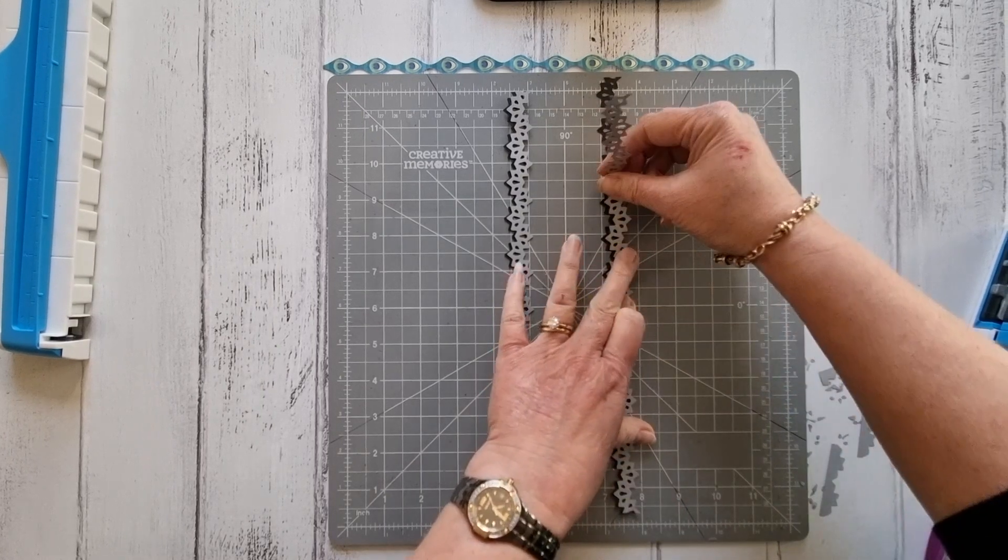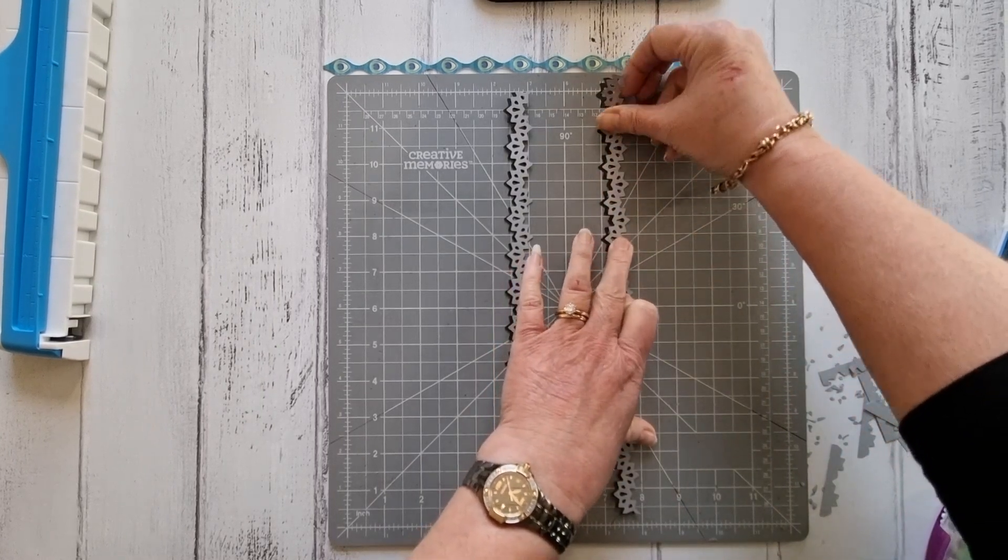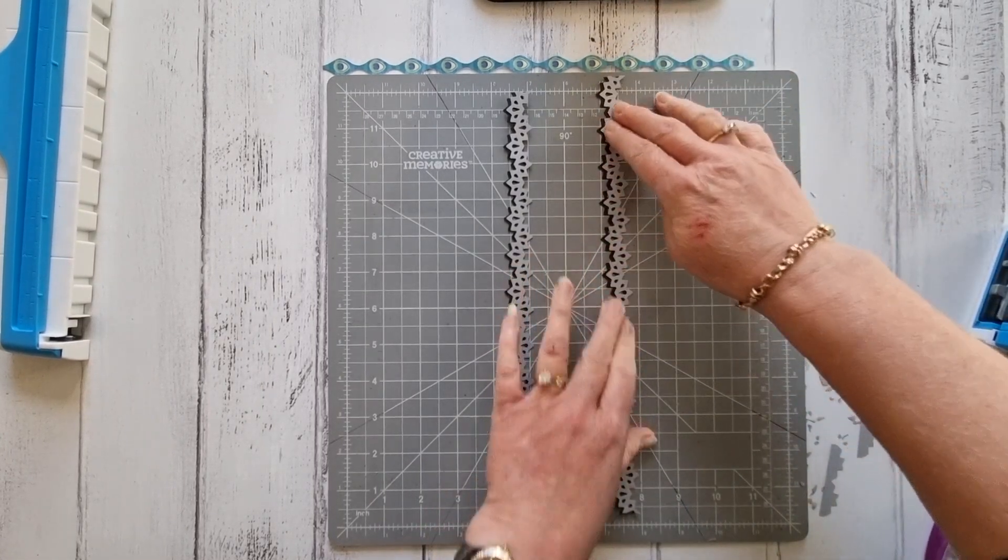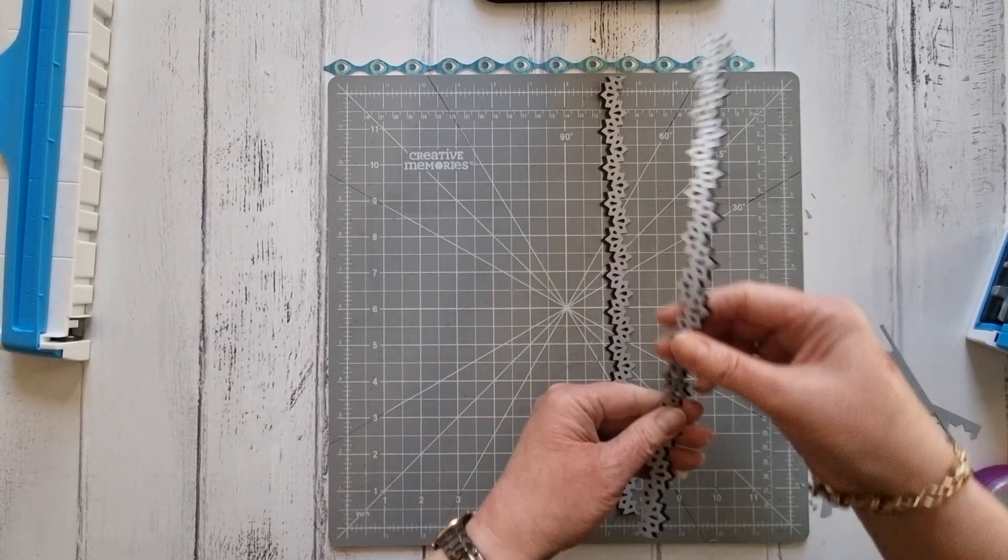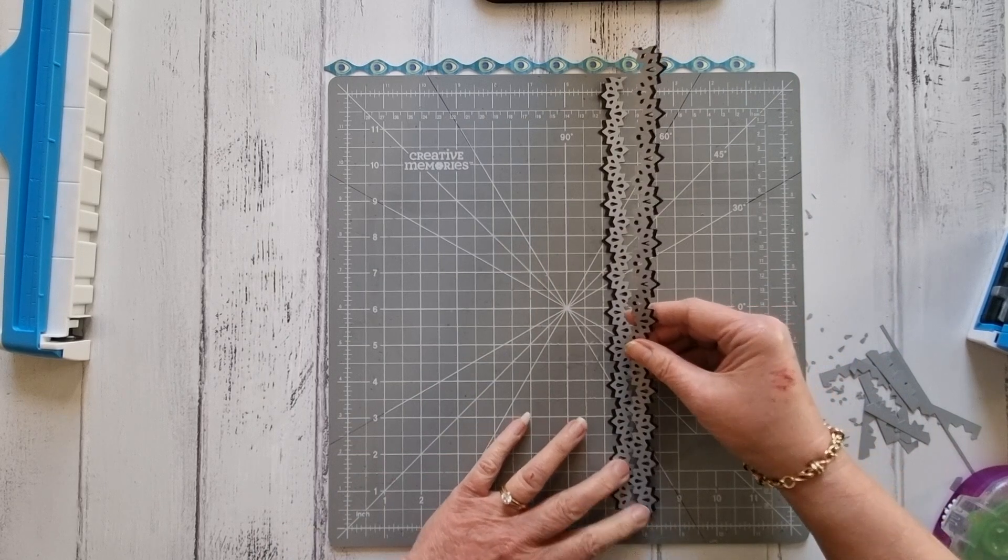You can do this with a lot of our border makers or border punches as well, give it that shadowed effect.